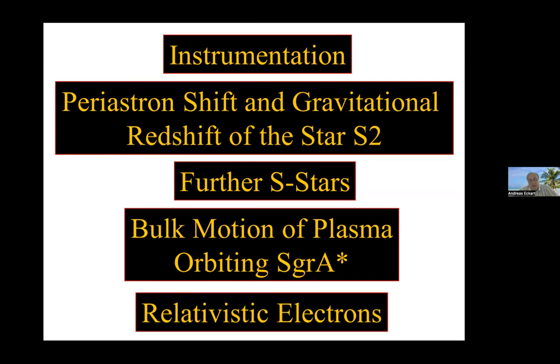So these are the points that I would like to put forward. I will talk a little bit about the instrumentation, only very, very briefly. Then I will talk about the periastron shift and the gravitational redshift of the star S2. I will then go into other stars, further S stars. So S stars are the high velocity stars. We just named them one after the other. S stands for Stern, star. So S1, 2, 3, and so on. I will introduce a few interesting candidates that we found recently that are on very elliptical orbits. And we will see that most of them also are relativistic objects, at least during the periastron passages.